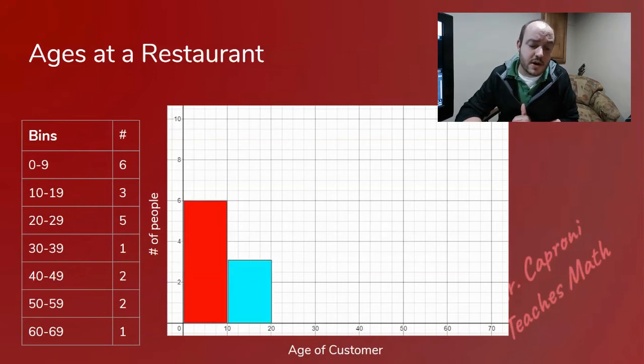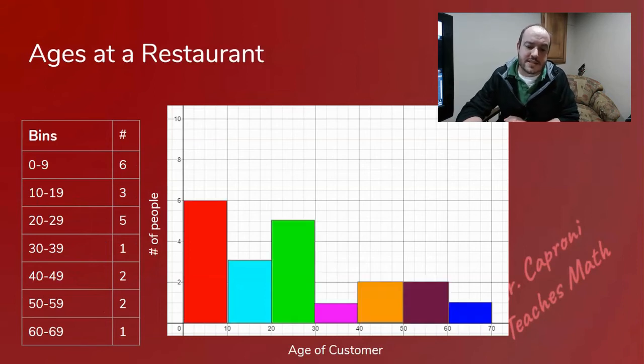I can do the same with my next bar. From 10 to 19 should go up to the three mark. Notice again the bar ends at the 20 mark instead of 19 because it includes all people that were like 19 years old and seven months. And we can continue the rest of the graph like this so we have all of our bars and we have a beautiful looking histogram like this one in front of you. Boom!